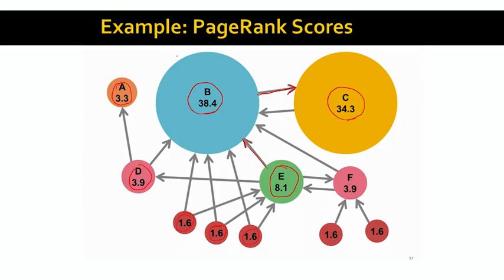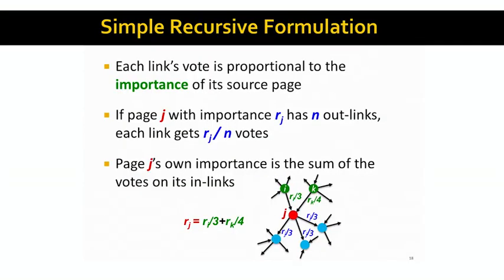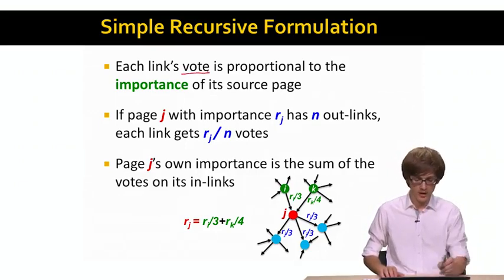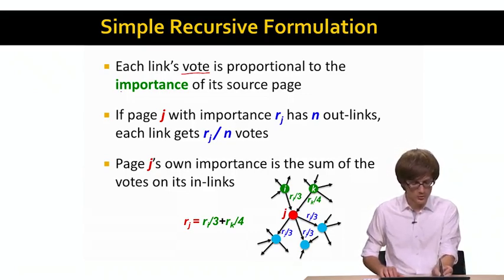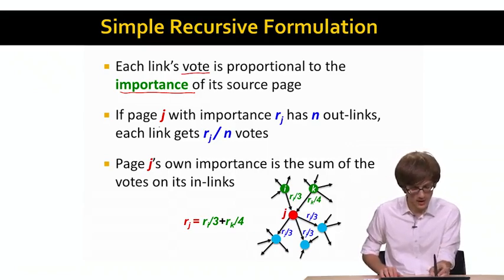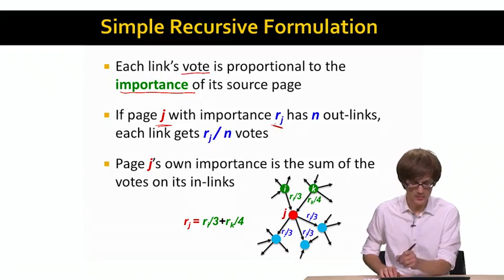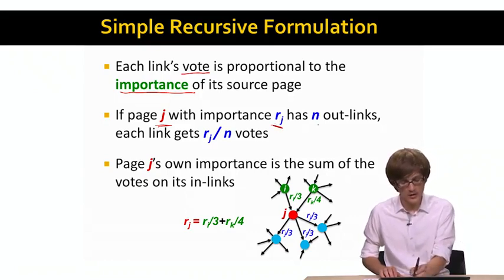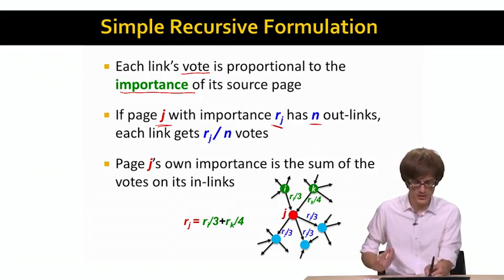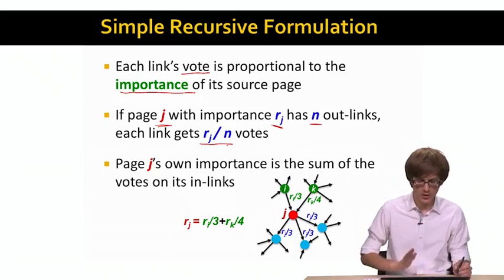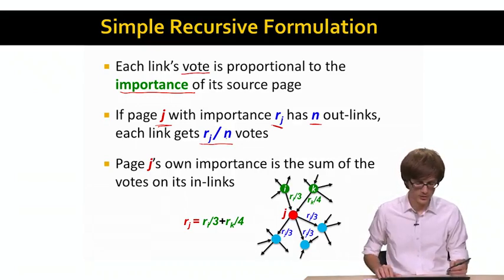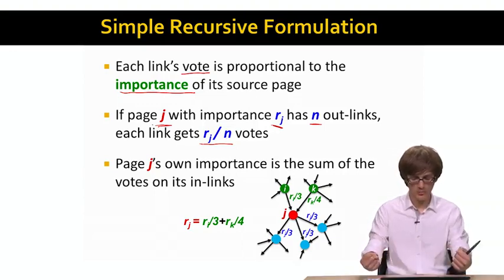How do we compute these importance scores? We come up with a simple recursive formulation where each link is a vote and the importance of a given vote is proportional to the importance of the source web page casting that vote. If page J has importance R_J and N outgoing links, then this importance R_J gets split evenly across all outgoing links. Each link carries R_J divided by N votes of importance to spread to the target page.